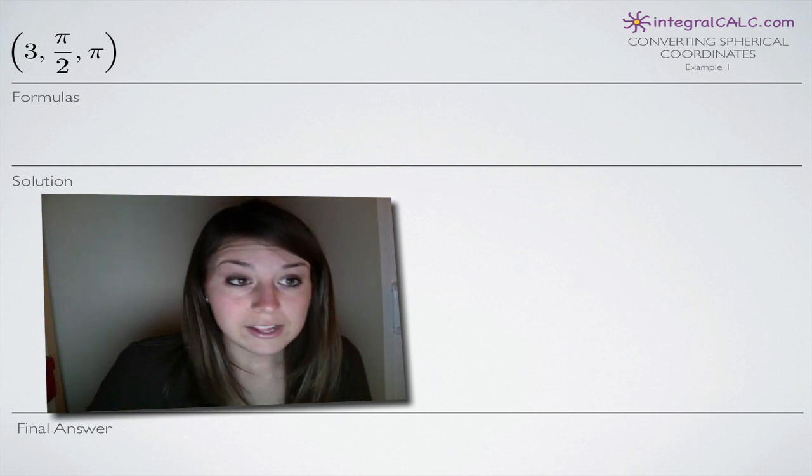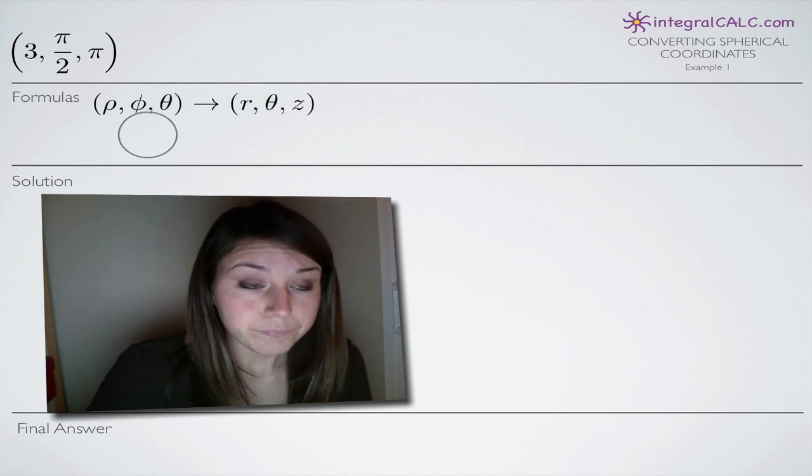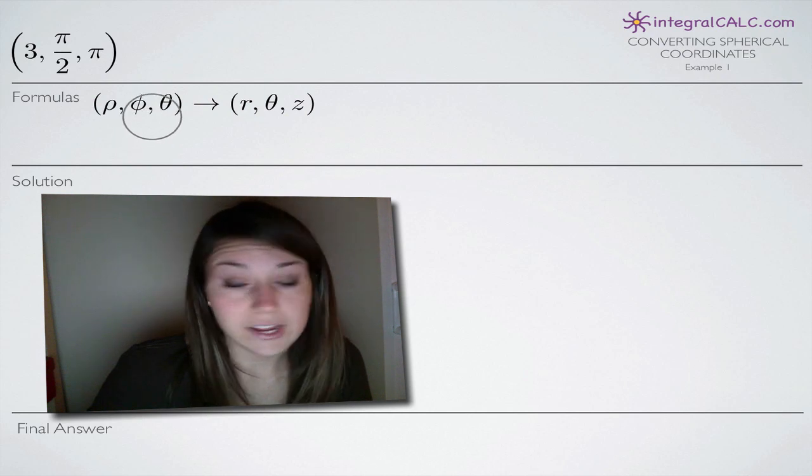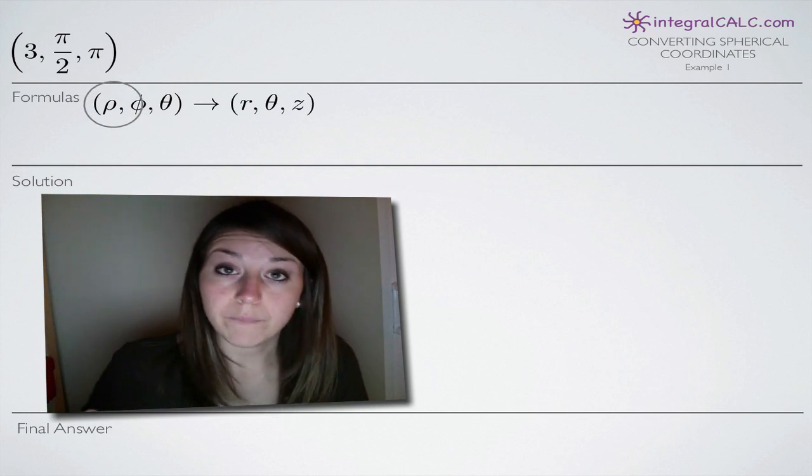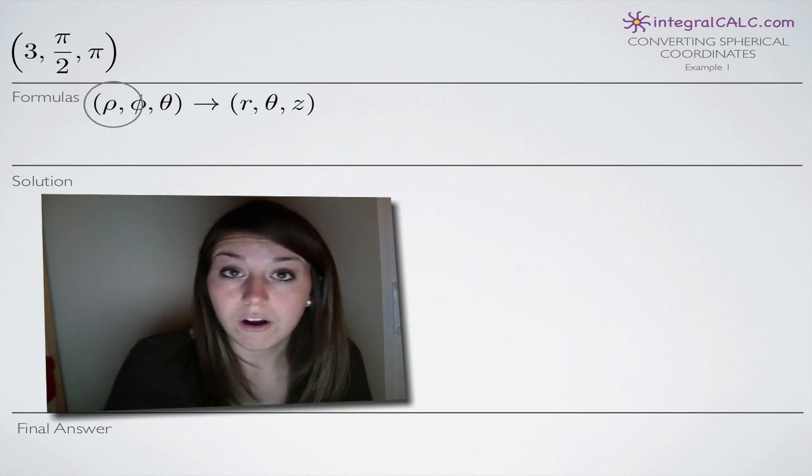So the formulas we're going to need to do that are the following. First of all, we have to recognize that when we have spherical coordinates, they are given to us in this form here. Instead of rectangular or Cartesian coordinates, which are x, y, z.